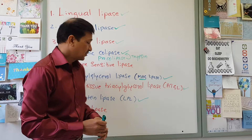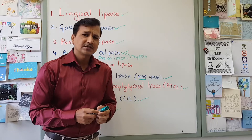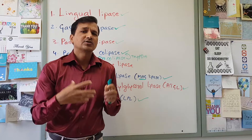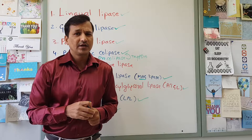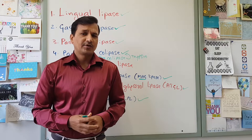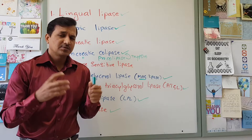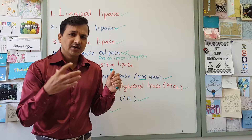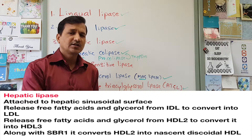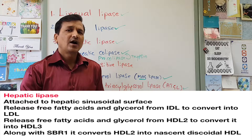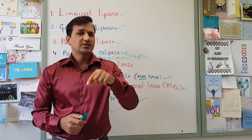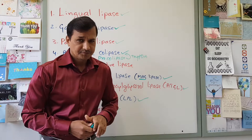Our last lipase is hepatic lipase. Hepatic lipase is attached to the hepatic sinusoids and breaks down triacylglycerol present in IDL — intermediate density lipoprotein — converting IDL into LDL by removing its triacylglycerol. Another function of hepatic lipase is converting HDL2 into HDL3. HDL2 is converted to HDL3 after degradation of triacylglycerol present in HDL2, and this conversion is carried out by hepatic lipase.